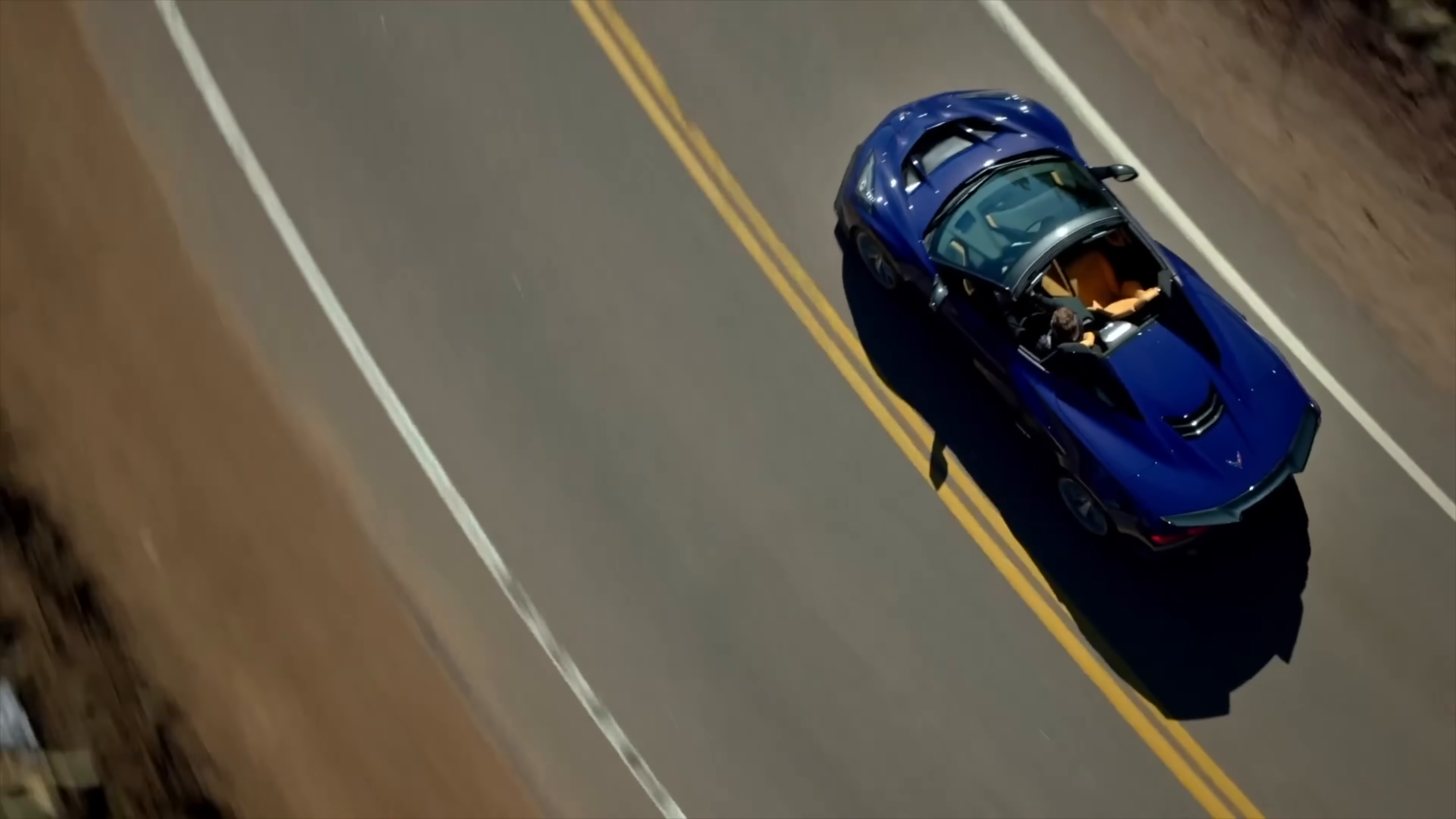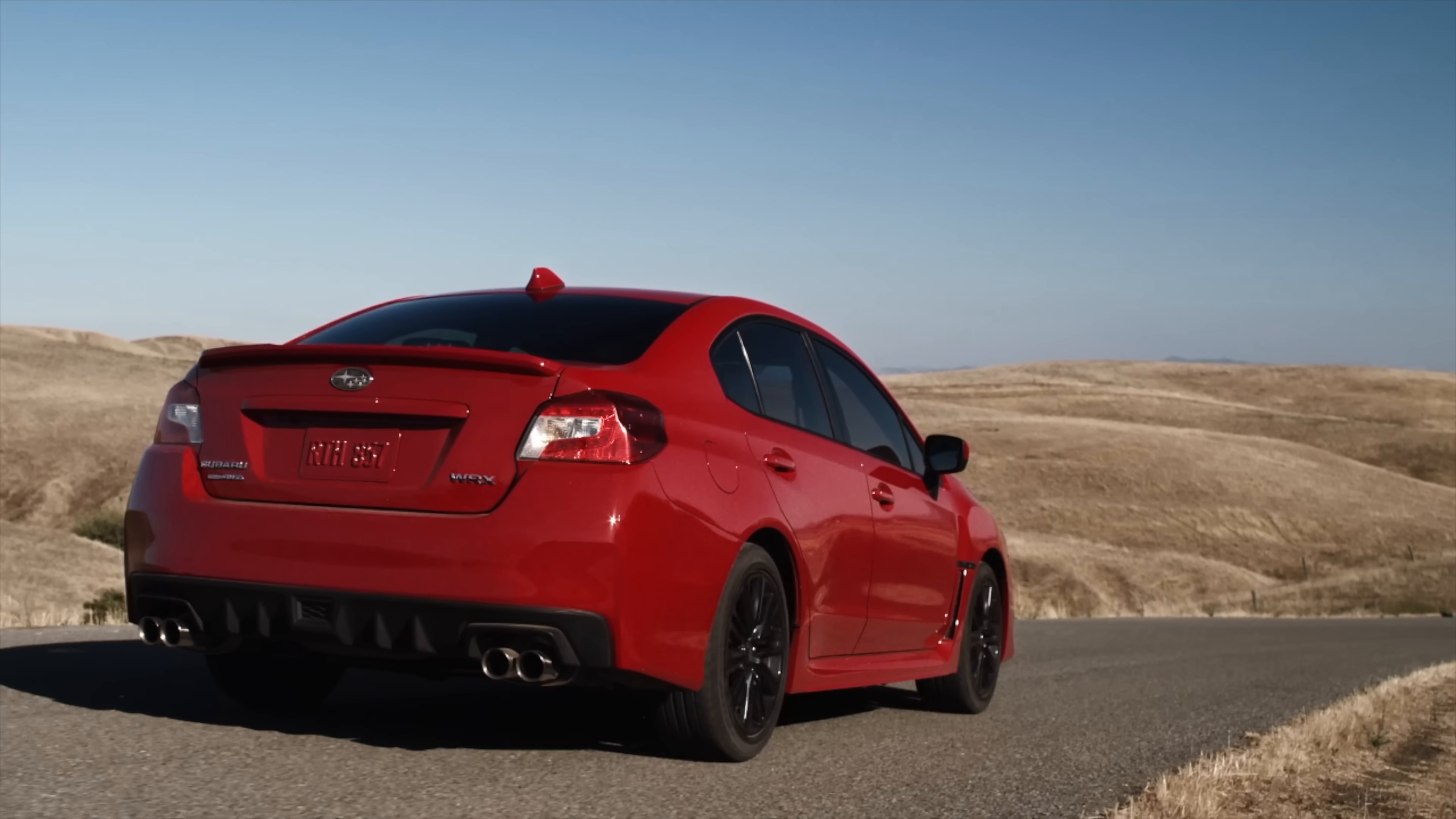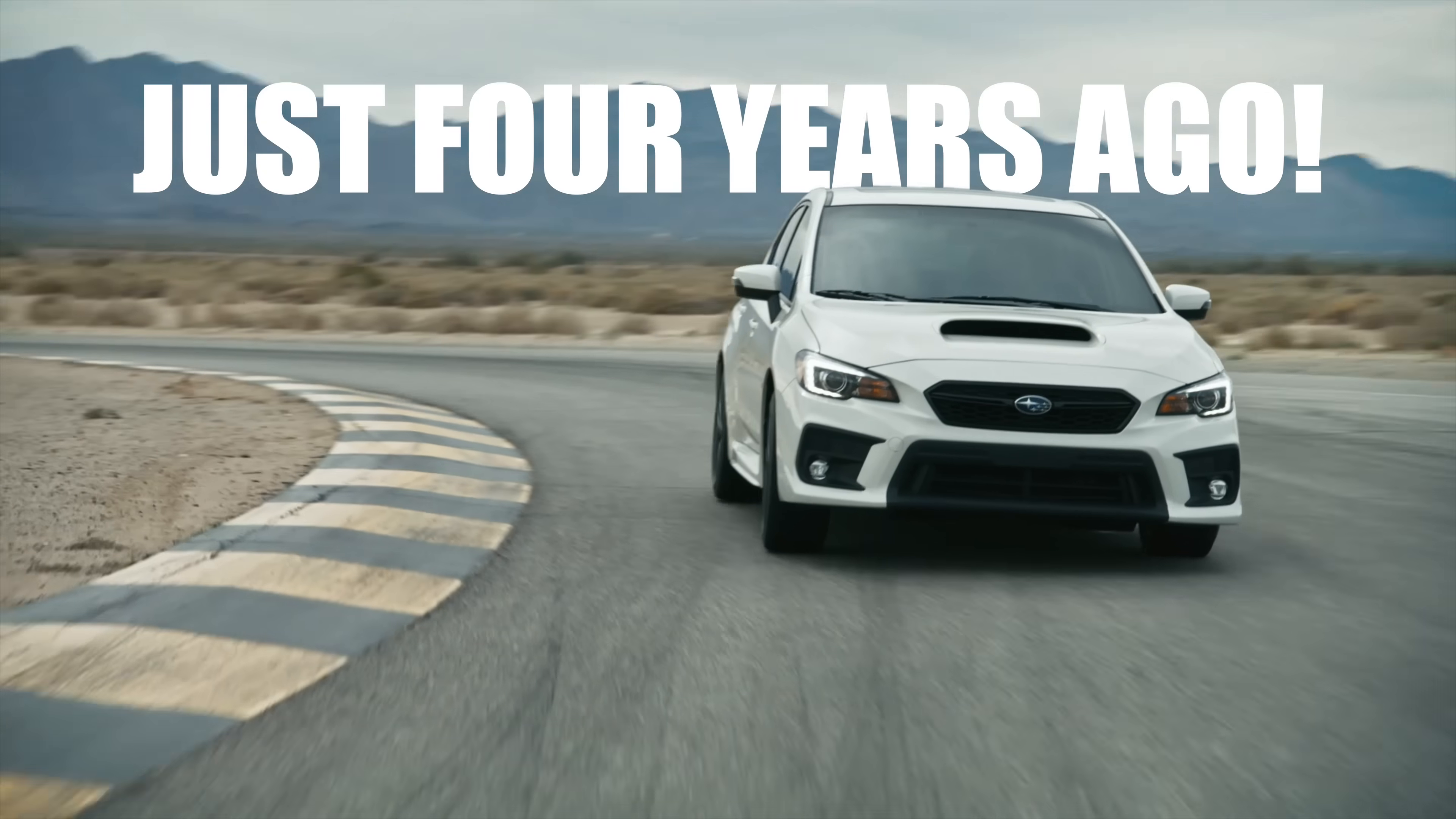Now there are two major points worth mentioning here. First, electronic wastegates are not that new. However, mass adoption is still relatively recent for this technology. I was surprised to learn that many modern cars still use vacuum actuated wastegates in the 2010s and even the 2020s. For example, when I try to think of a car that has a turbocharged engine and poor throttle control, I think of the 2.0 liter Subaru WRX, a car that was sold as late as 2021, just four years ago.